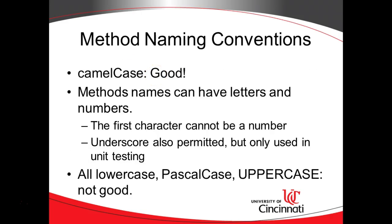Now, some method naming conventions: camel case is good. Methods can have letters and numbers. The first character has to be a letter, cannot be a number. The underscore is permitted in a method name, but that's not commonly used unless you're writing some unit tests. All lowercase, Pascal case, or all uppercase — we know those are not good for Java method names.